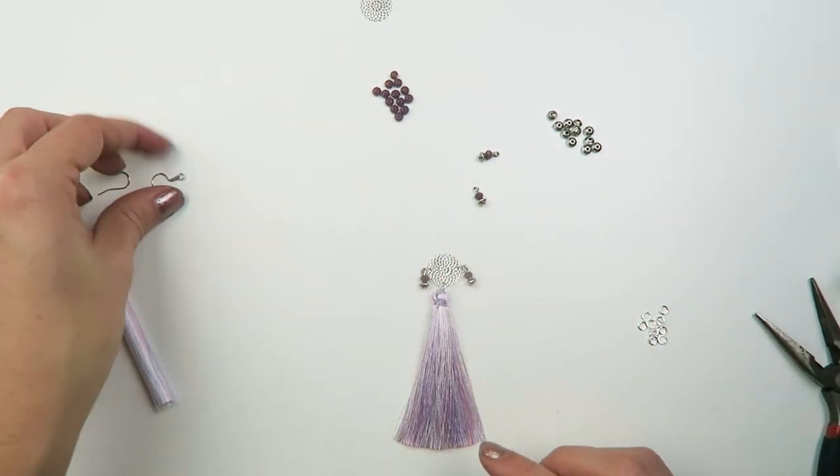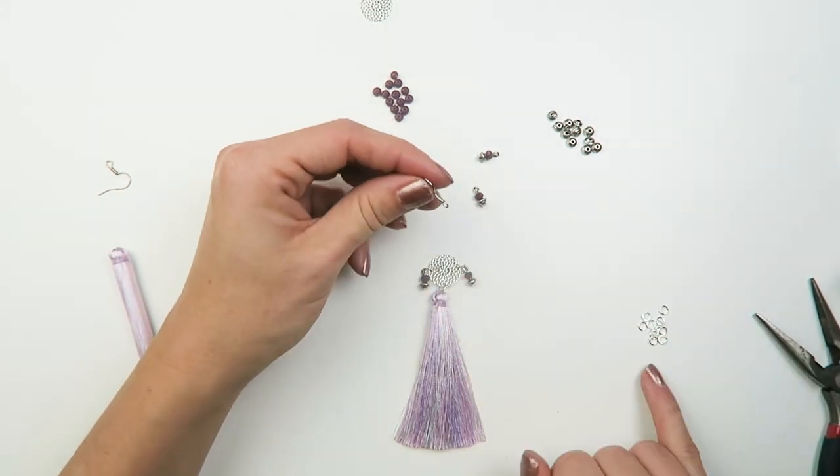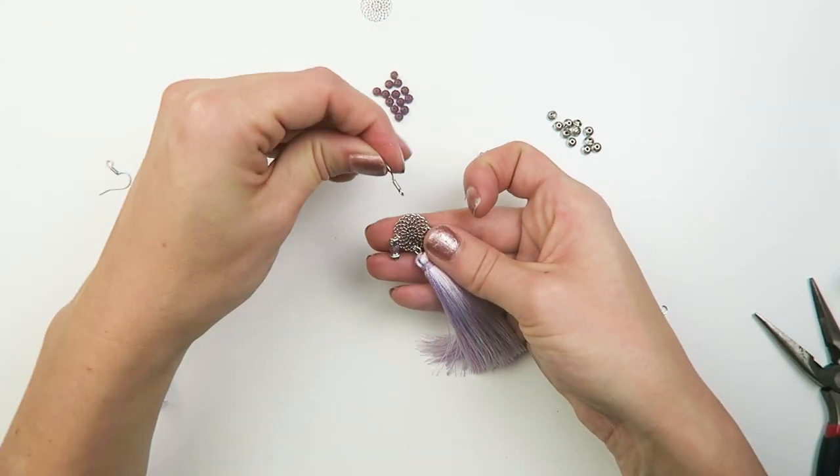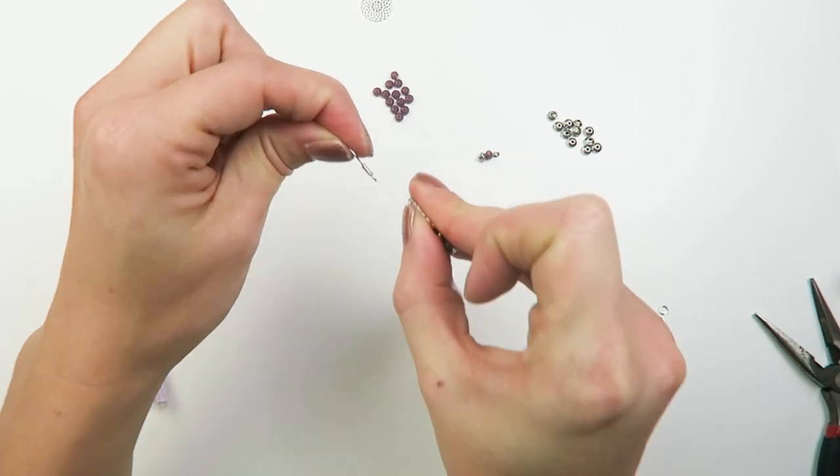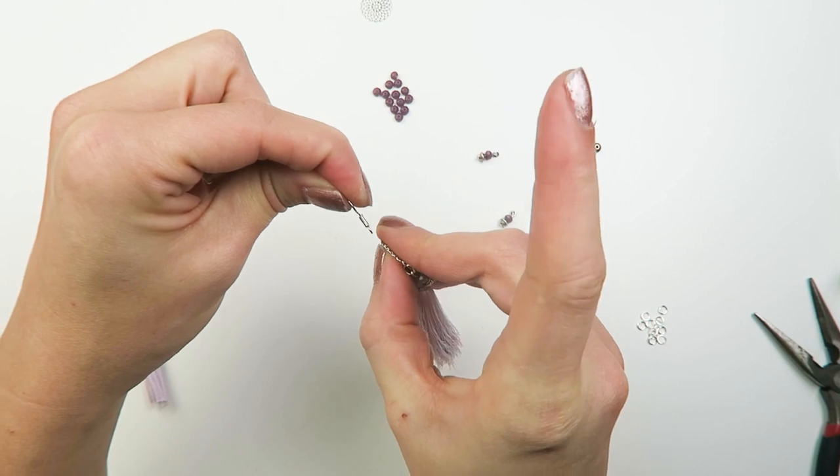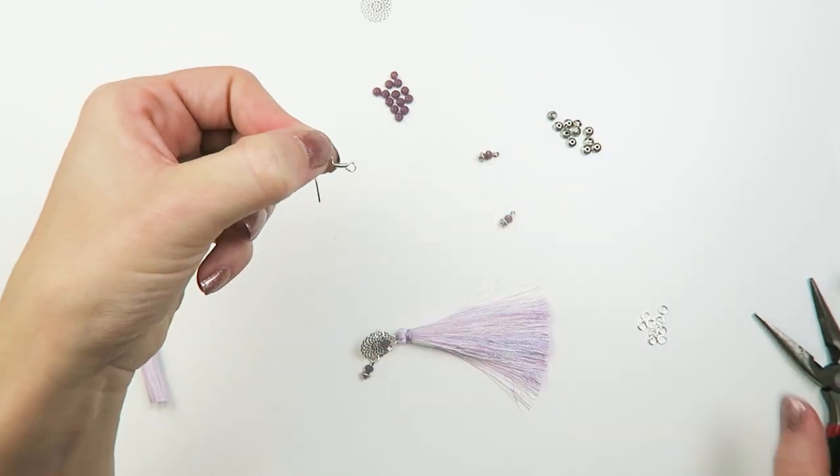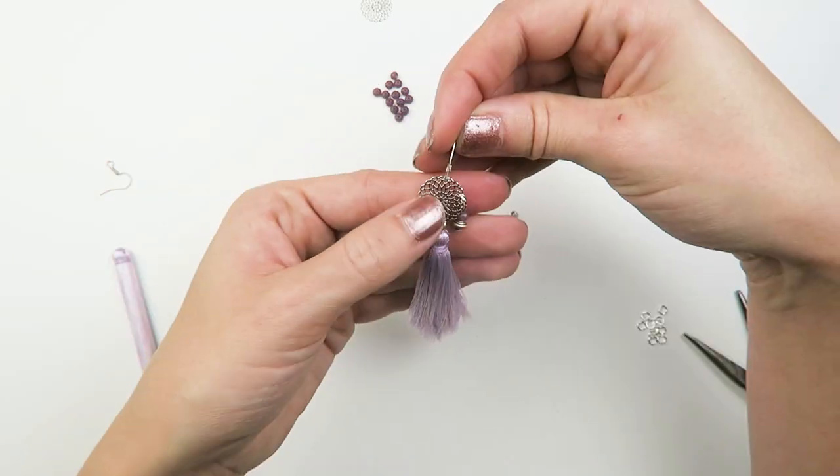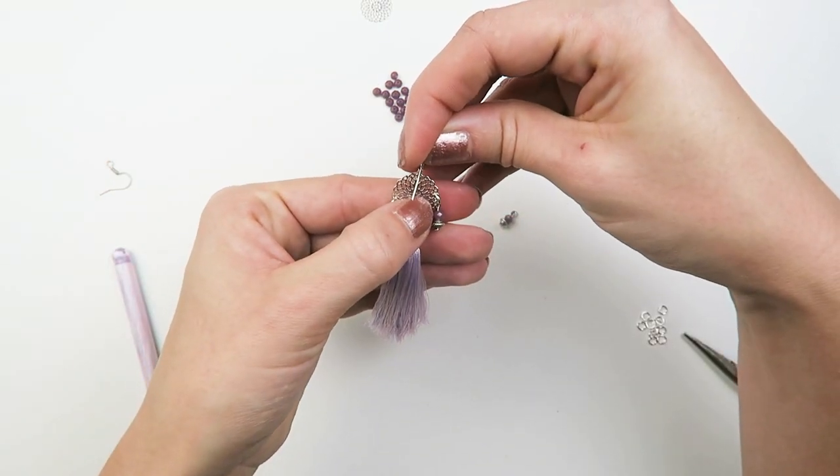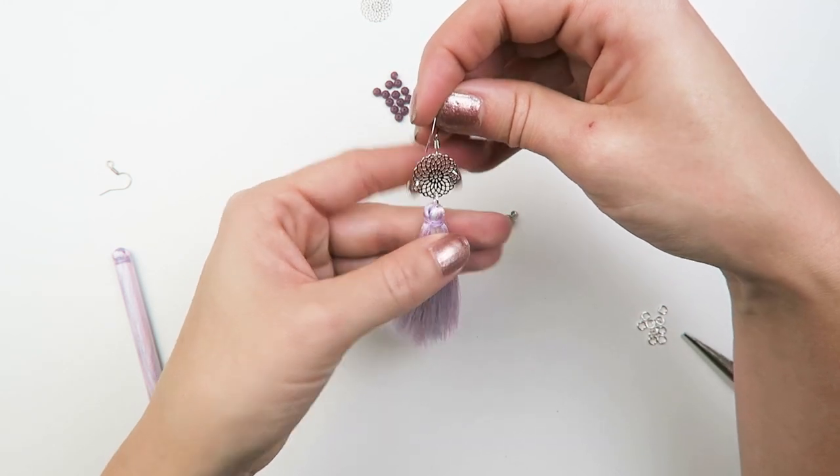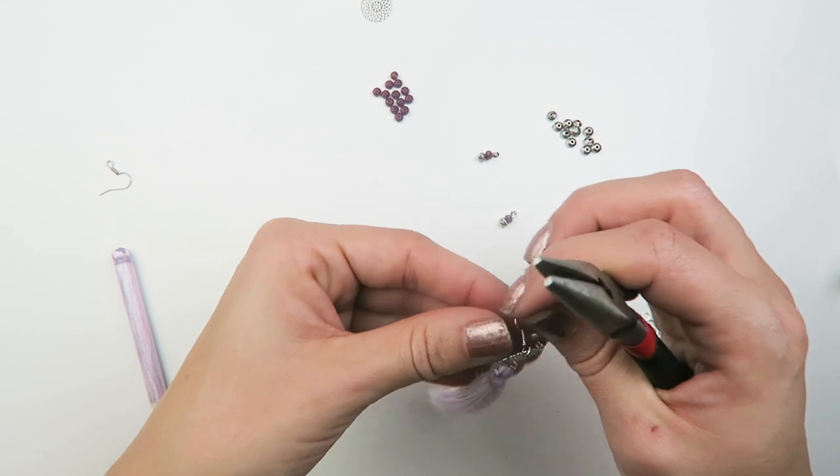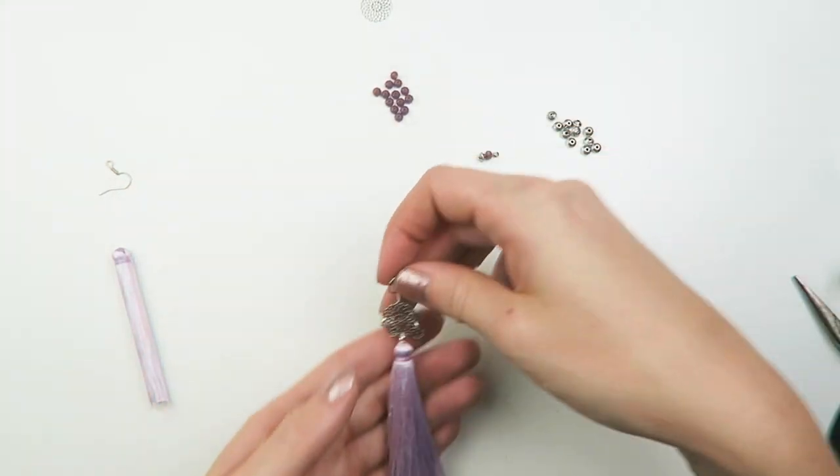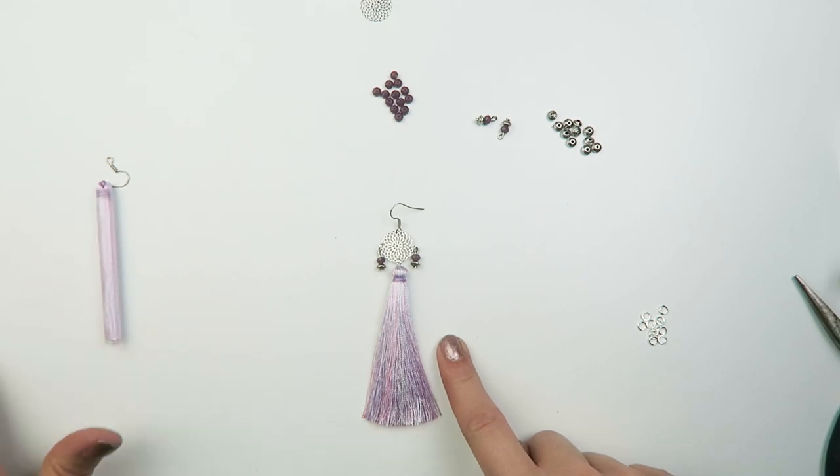Okay so I'm almost done. I just need to attach the earring hook. And this depends on your connector, if you're going to need a four millimeter jump ring or not. So you want your earring to be hanging like this, and not like this. So in this case I'm not using an extra jump ring because then my tassel would hang like this. I'm just going to attach it straight to the earring hook. So I'm just going to open that a little bit. And see this is the middle. Okay perfect. So that's your first earring done.